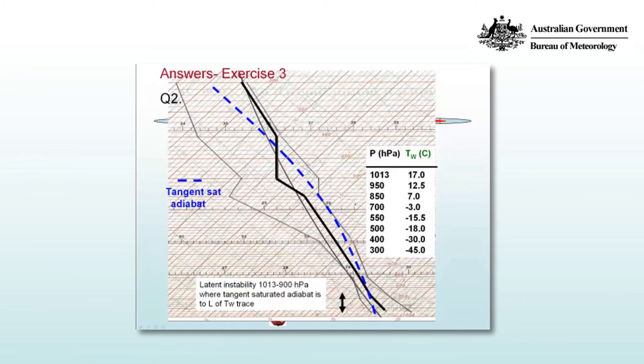Here are the values plotted for the wet bulb temperature. Note there's an error in the plotting at 500 hectopascals, though the table value is correct. The tangent saturated adiabat touches and grazes the profile in the region where the atmosphere approximates the saturated adiabat, so it doesn't just touch at one point. The wet bulb profile as plotted is to the right of the tangent saturated adiabat below 900 hectopascals. Therefore, the layer from 1013 to 900 hectopascals is latently unstable.